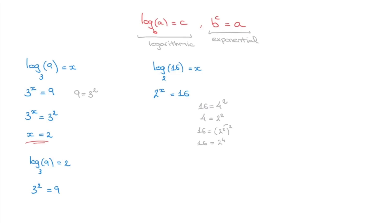So we can rewrite our equation as 2 to the power of x equals to 2 to the power of 4. Now that both sides of the equation are written as powers of the same number, we can go ahead and equate the exponents — that is, we can write x equals to 4. And that's the answer. In other words, log base 2 of 16 is equal to 4, or in exponential form, 2 to the power of 4 is equal to 16.